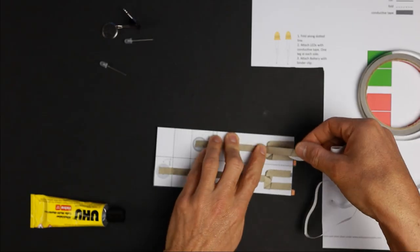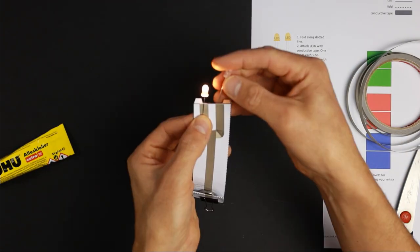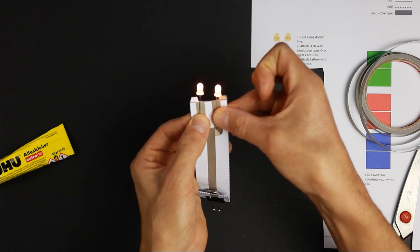Cut it, trace the circuit and glue it together. Fold the battery holder and test the LEDs. The long legs have to point to the plus pole of the battery.